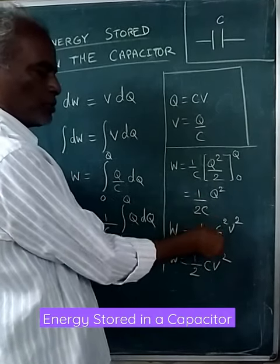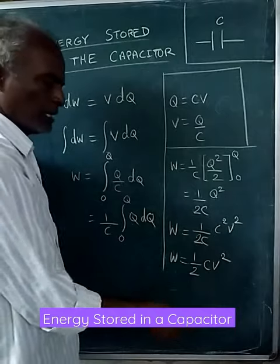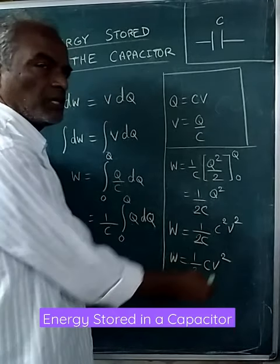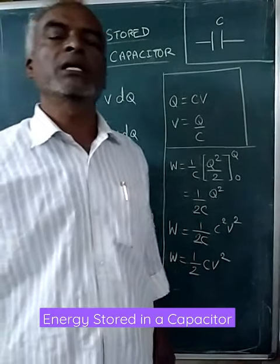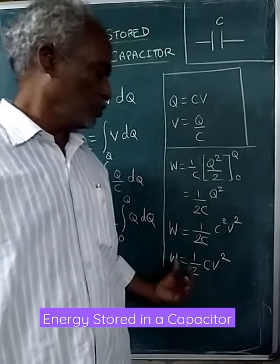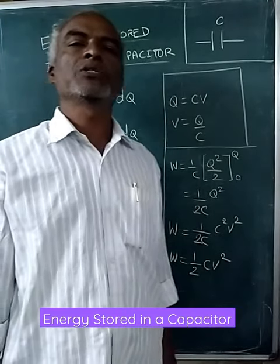But Q equals CV. You substitute. After simplification, you will get work done equals half CV squared, which is nothing but the energy stored in the capacitor. Energy stored in the capacitor is half CV squared.